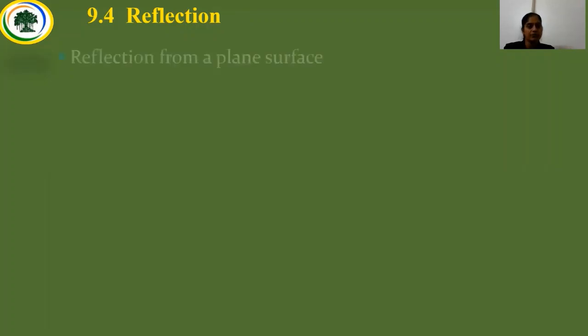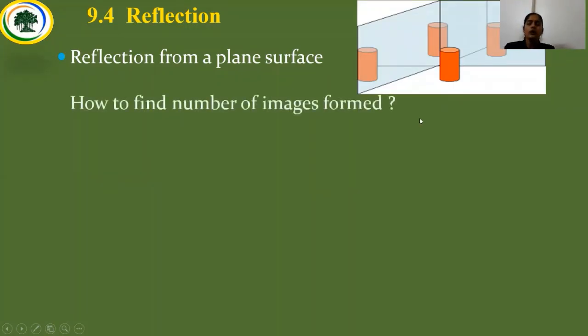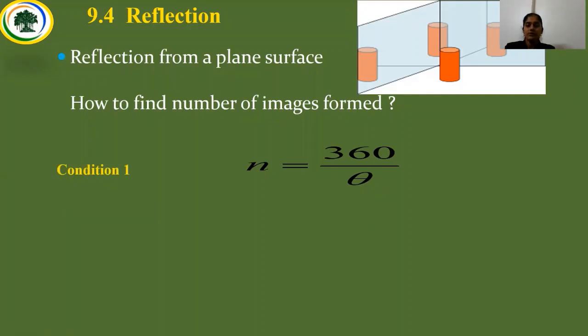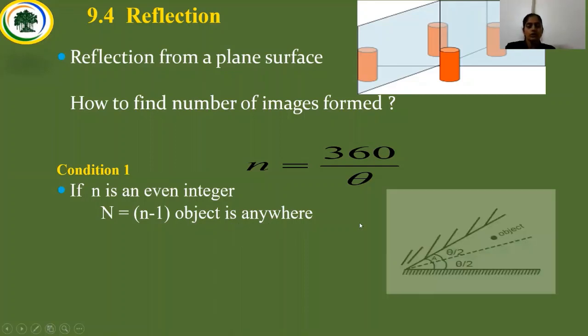Let us move on to a new point — section 9.4 on reflection. We want to find the images when two mirrors are inclined to each other with an object placed between them. For reflection from a plane surface, the formula to find the number of images is n equals 360 divided by theta. Condition one: if n is an even integer, the number of images N equals n minus 1, with the object anywhere.